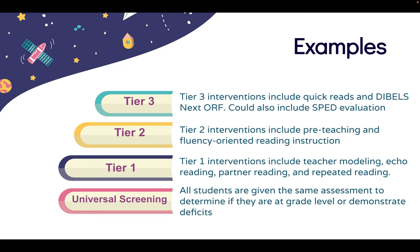Tier three interventions could include Quick Reads, which is a pretty extensive program where students go through a four-level program three to five times a week on an individual basis, with sessions ranging from 15 to 30 minutes depending on need. And then the DIBELS Next ORF assessment — DIBELS stands for Dynamic Indicators of Basic Early Literacy Skills, and ORF stands for Oral Reading Fluency. This assessment is used to monitor early reading and literacy progress and can also be used as a screening tool. If all else fails and interventions don't seem to be working, it would be best to advocate on behalf of the student to get a SPED evaluation to determine if there might be a learning disability present.